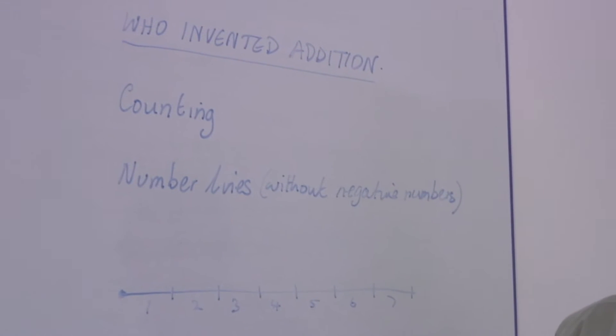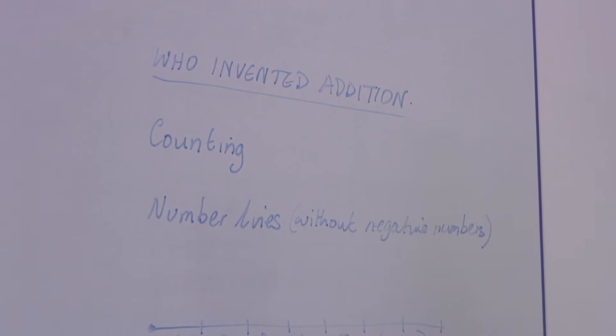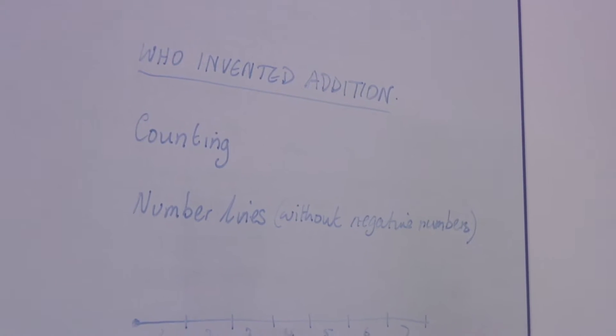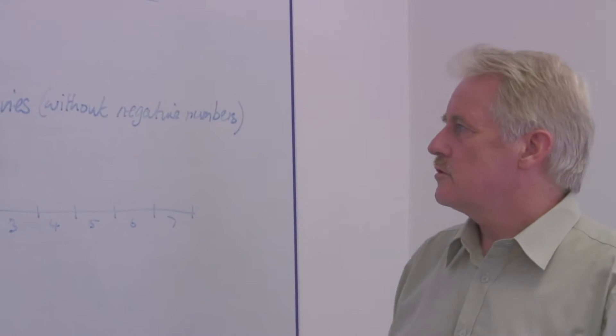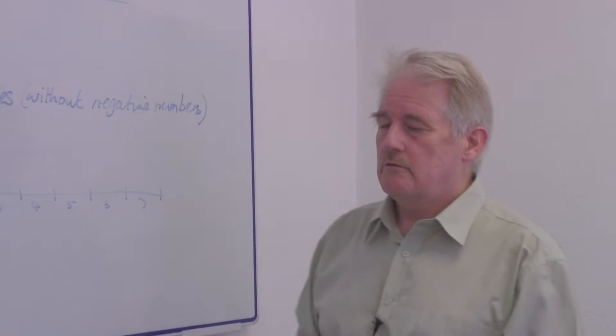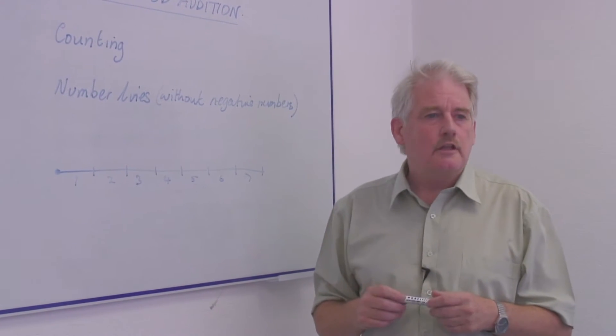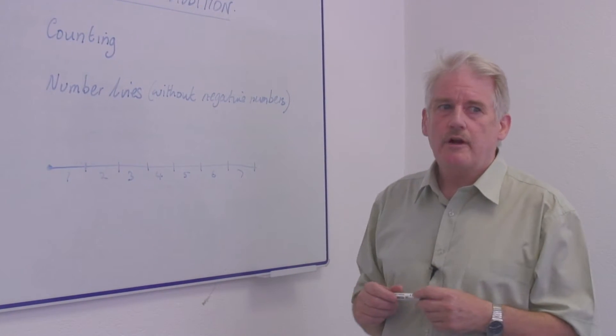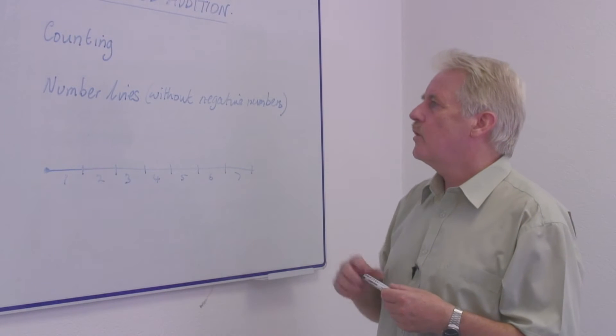Counting had been known from very early times. We have always been able to count, usually using our fingers. Number lines were used to add numbers together in the far distant past. Obviously the Greeks and the Romans were able to add and to count. So this has been well known.